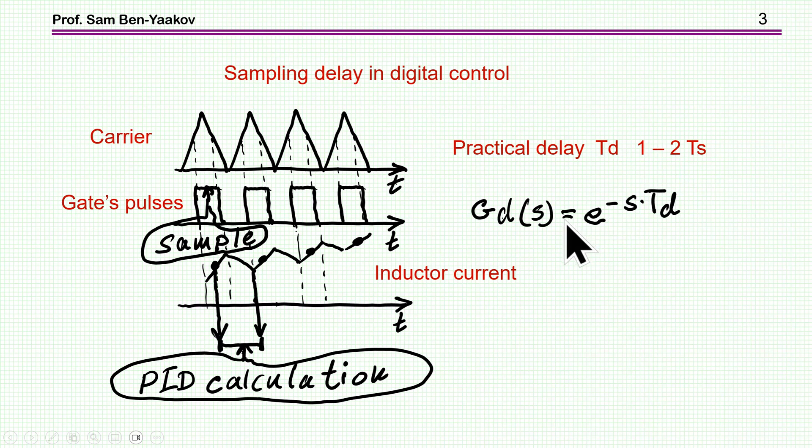It could be somewhere in between one to two times of the period of the switching frequency. So there is a delay. And this delay can be expressed in the Laplace domain by this function, e to the power s, as the Laplace variable, and t delay is the delay in seconds. So this is a classical expression that you can use in transfer function.